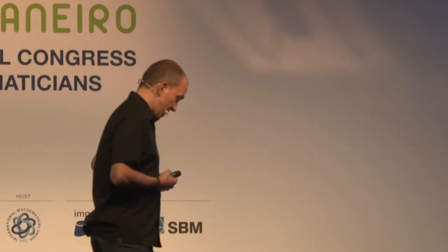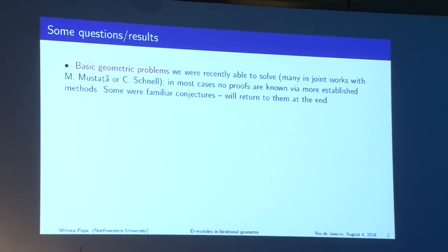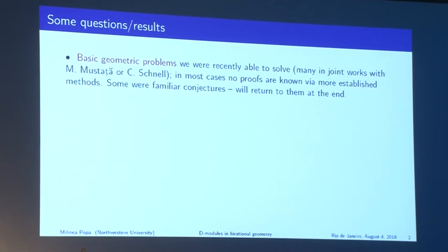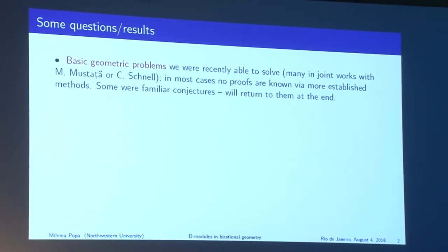The topic of this lecture is how the theory of mixed Hodge modules can be used to attack some problems of a concrete flavor in complex and birational geometry. The speaker will begin by giving a sense of some of these questions, especially in works with Mustata, Schnell, and others, where more elementary techniques are insufficient.